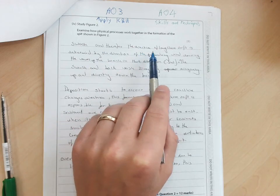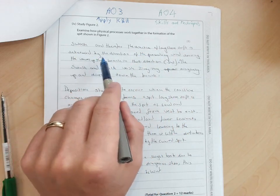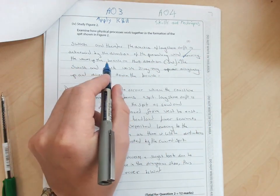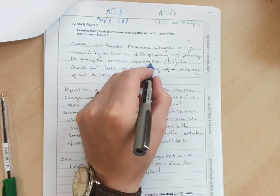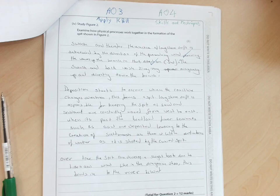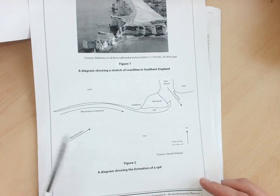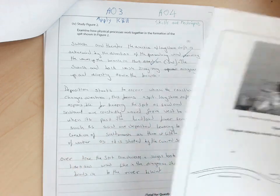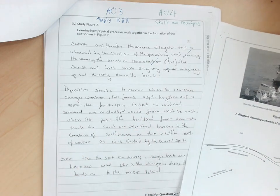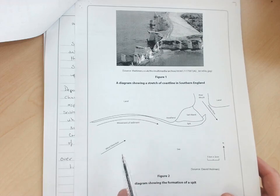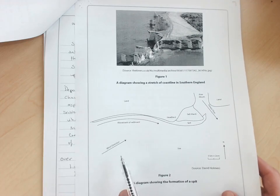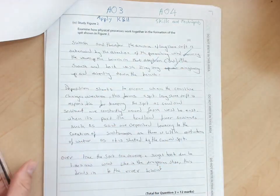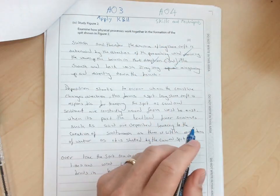Swash, and therefore the direction of longshore drift is determined by the direction of the prevailing wind. That's correct. Driving waves at the beach in that direction. That's correct. Next to that, she's actually said it's coming from the southwest, and that's correct. So she's now applying her knowledge and understanding of the skills involved in studying the coast to this question. So she gets some credit on AO4.